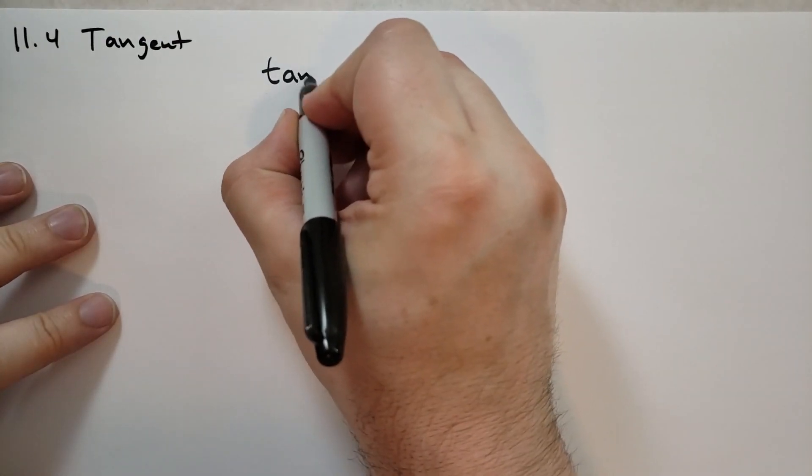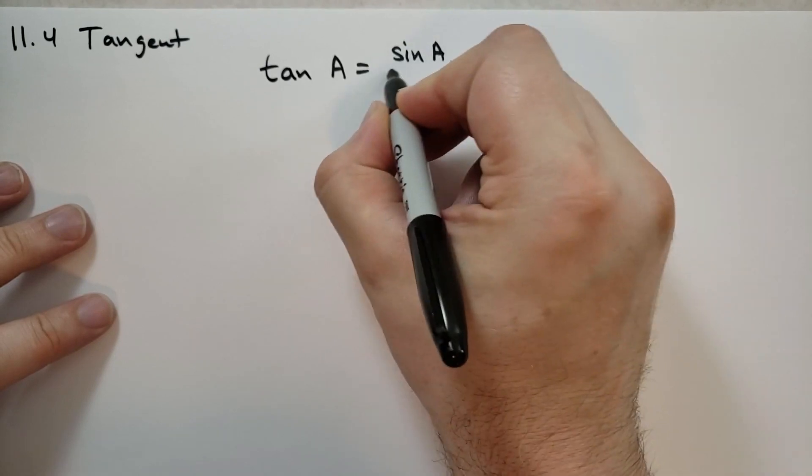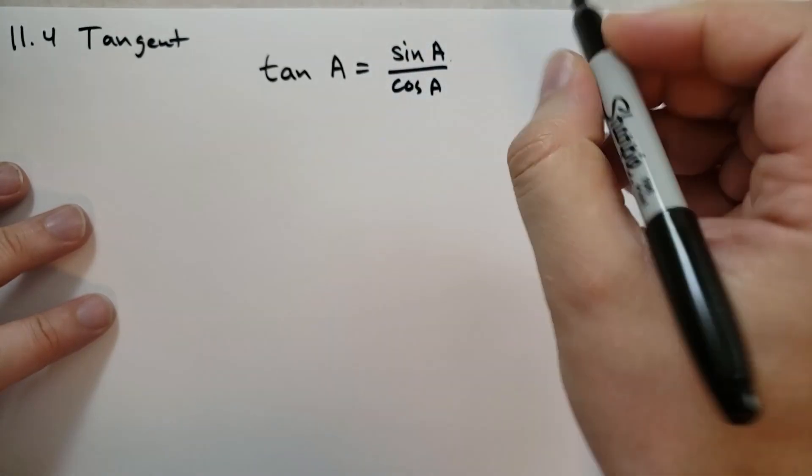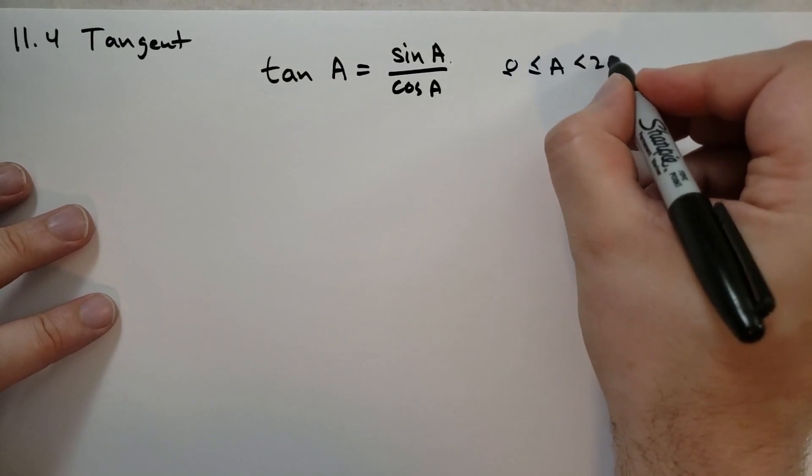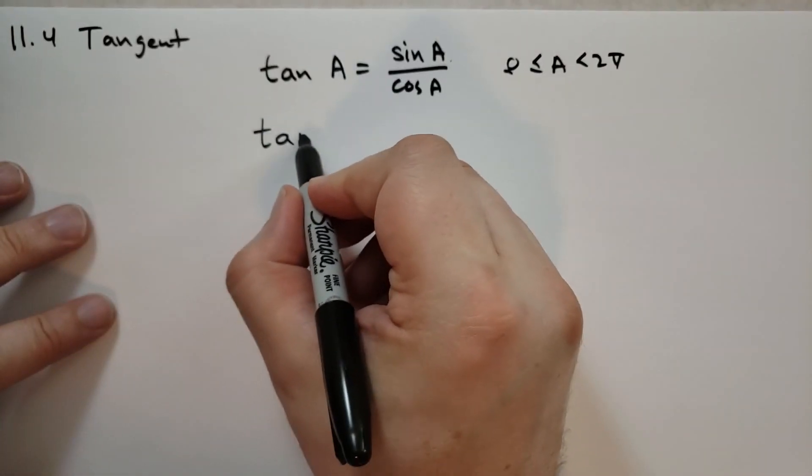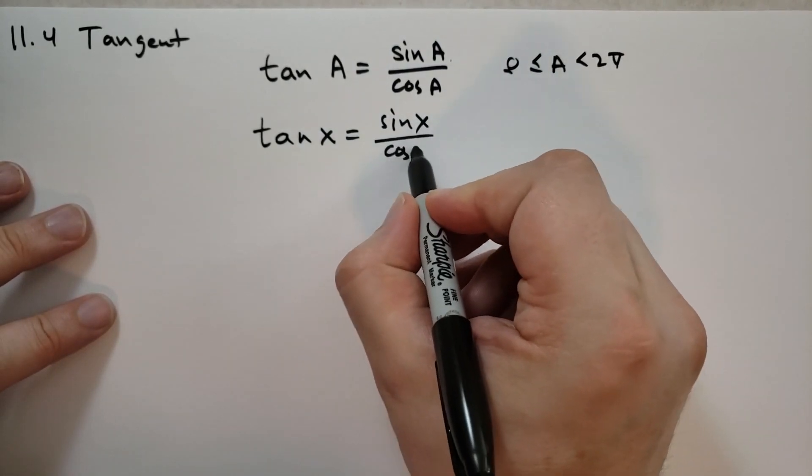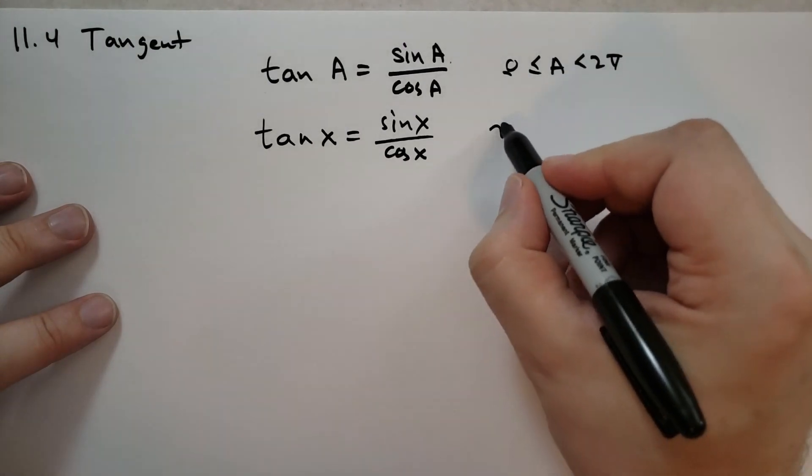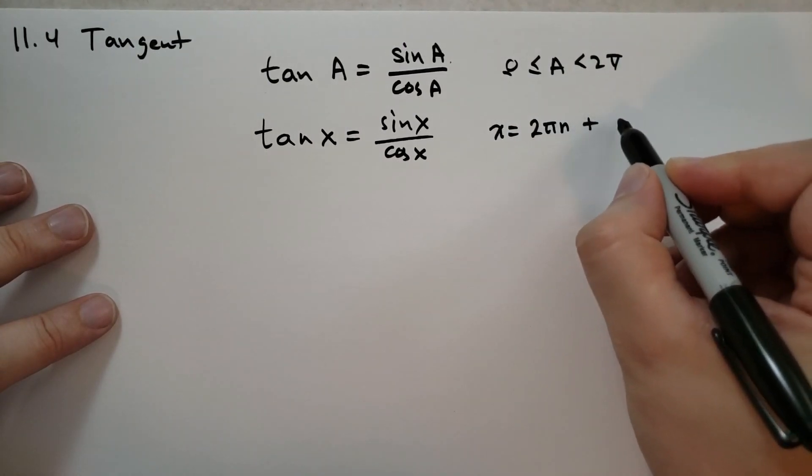Tangent is one of those weird things. If you have an angle A, the tangent is defined as the sine of that angle divided by the cosine of that angle. We have zero is less than or equal to A is less than 2π because we're dealing radians not in degrees anymore. And indeed this works for all values, all real numbers, where we can say that x is equal to 2π times some integer plus that angle A that lies between that range there.